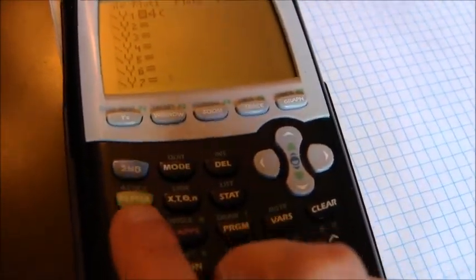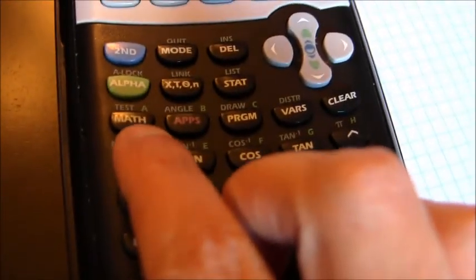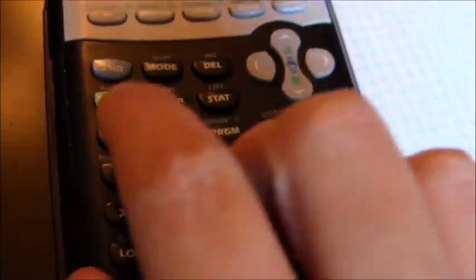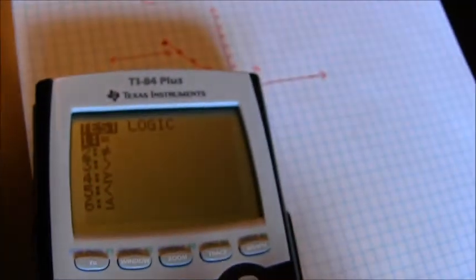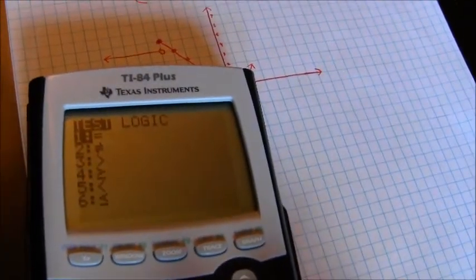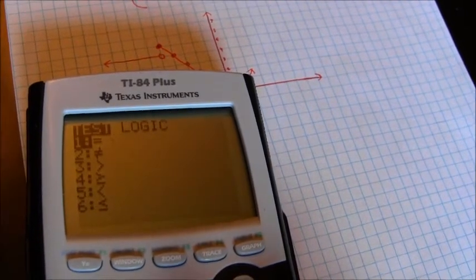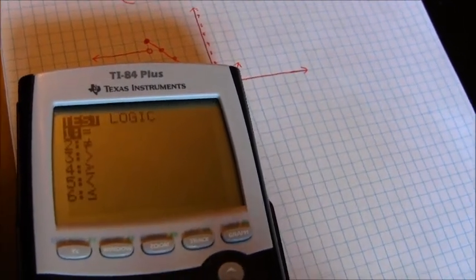And if you go to 2nd and then the test button, which is above the math button, 2nd test, you'll get a list of greater than, less than symbols, that kind of thing. In this case, I want a less than symbol, which is option number 5.